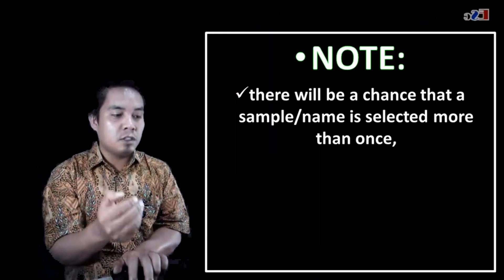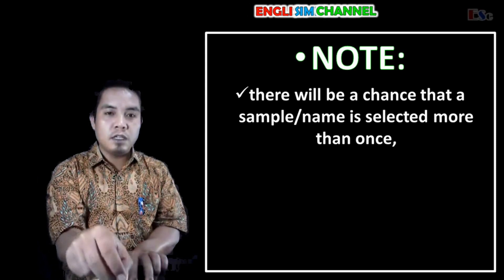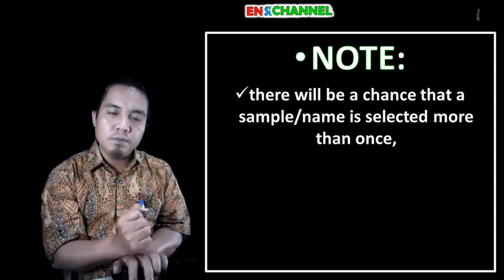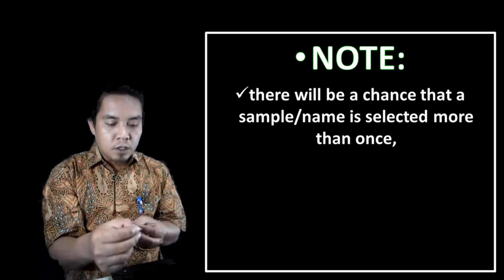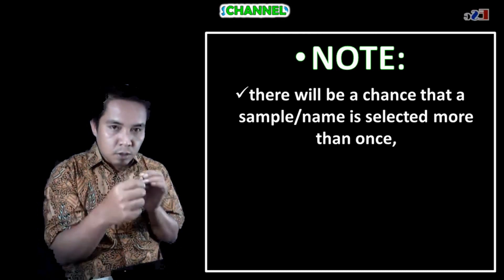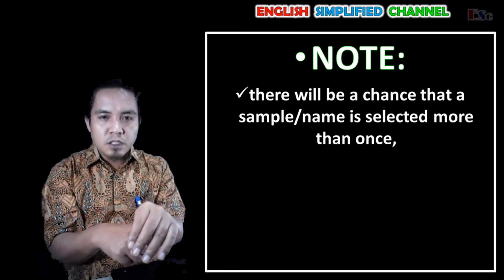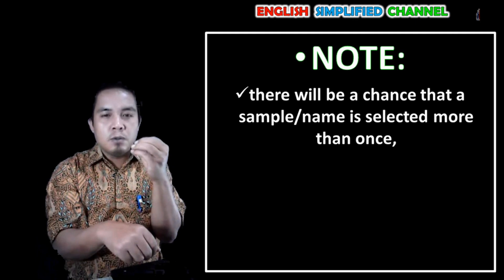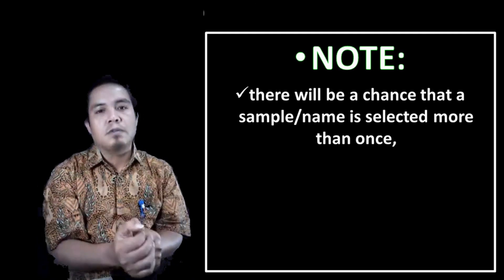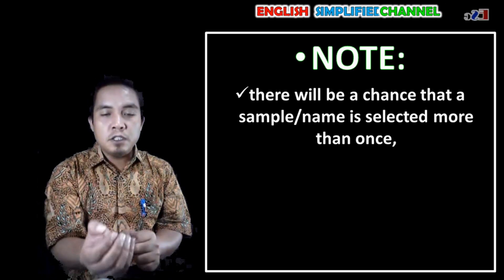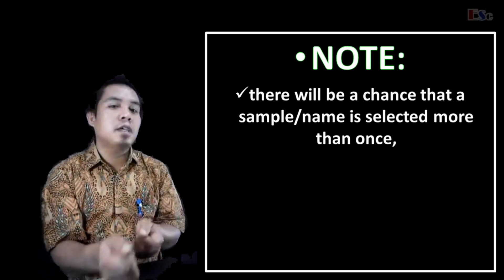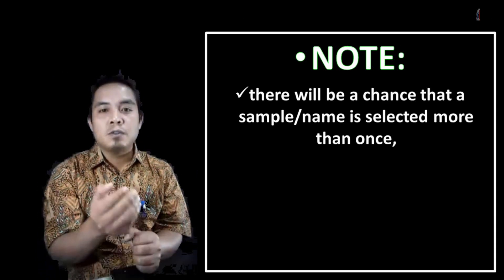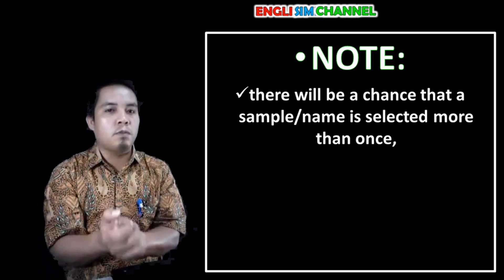There will be a chance that a sample or the name that we take from the box or container is selected more than once. Yes, that will be right. For example, you have taken the name and write it, put it back. It means there will be a chance that name which has been taken before will be taken twice and so forth. If it is happened, just put it back, discard, and then continue selecting/taking the sample until the sample size is obtained.